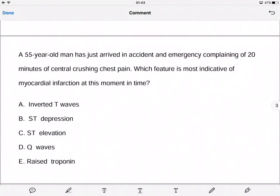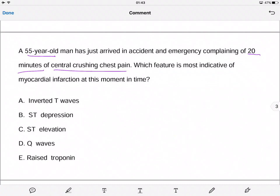The second question: a 55-year-old man has just arrived in A&E complaining of 20 minutes of central crushing chest pain. Again, age is significant, 20 minutes duration is very significant, and central crushing chest pain suggests cardiac cause. Which feature is most indicative of MI at this moment in time?